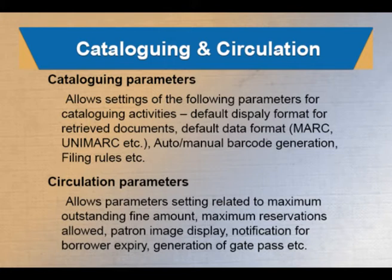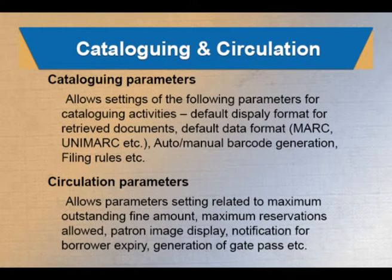Auto and manual barcode generation can be defined here - we can turn the option on or off. We can provide filing rules for sorting bibliographic records. In the circulation module, we need to define parameters related to maximum outstanding fine amount, maximum reservations allowed, patron image display, notification for borrower expiry, and generation of gate pass.